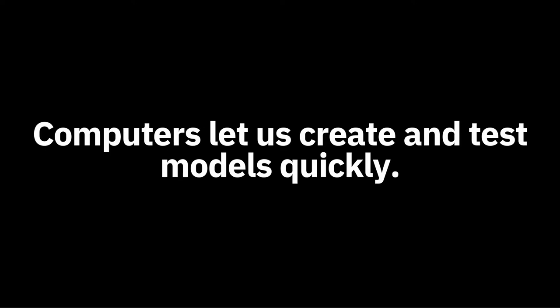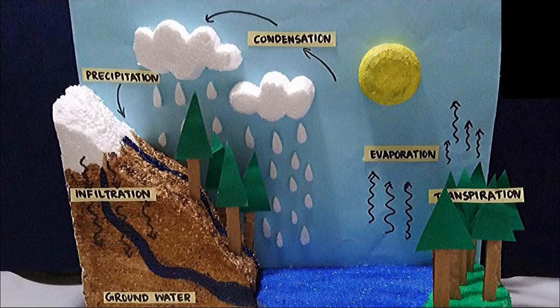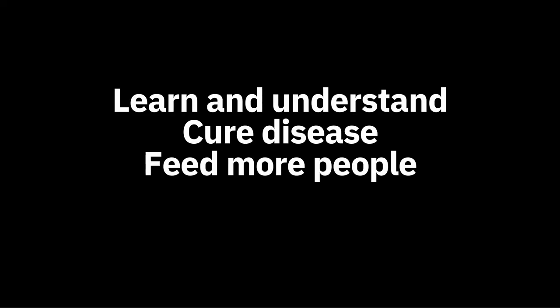Why do we model? Models help us see further. We can only experience the present. Models place the present into perspective with the past and the future. For instance, if it's raining today in the present, we can place it in this larger cycle, most of which we don't experience very easily directly. Models help us learn and understand, cure disease, and feed more people.